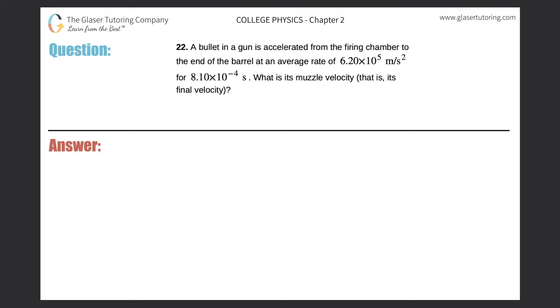Number 22. A bullet in a gun is accelerated from the firing chamber to the end of the barrel at an average rate of 6.2 times 10 to the 5 meters per second squared for 8.1 times 10 to the minus 4 seconds. What is its muzzle velocity? That is its final velocity.